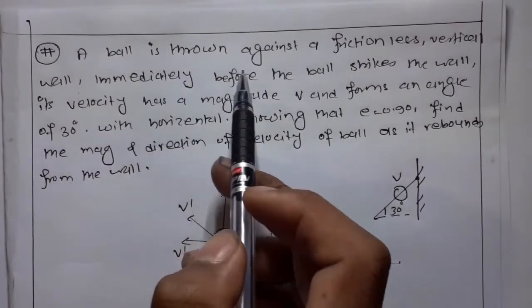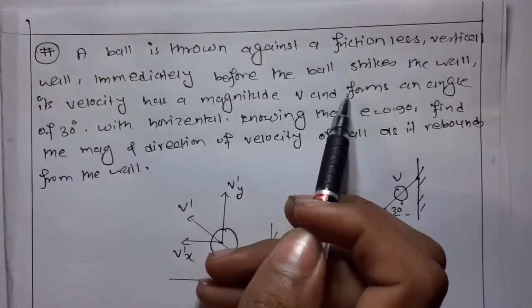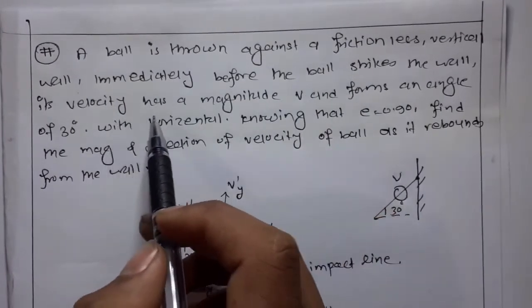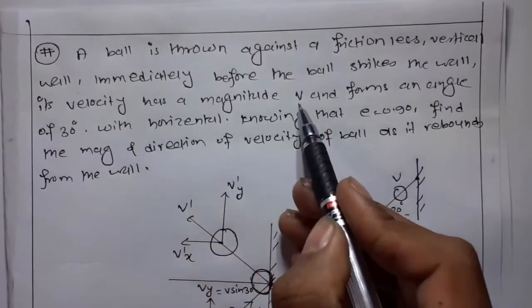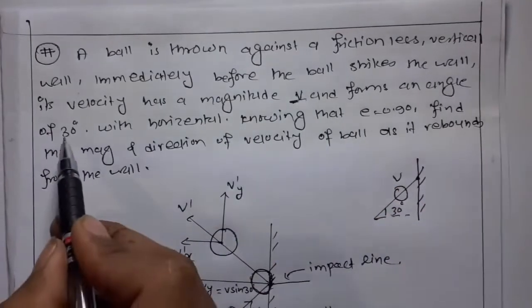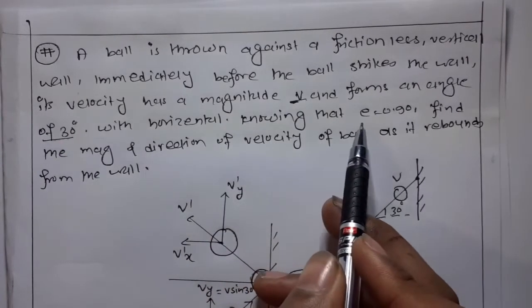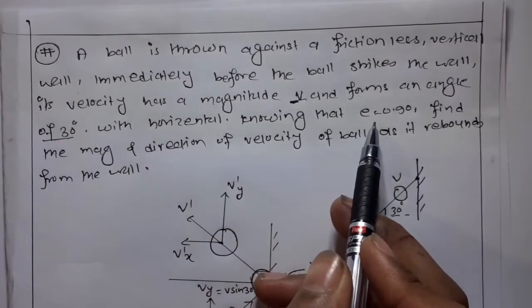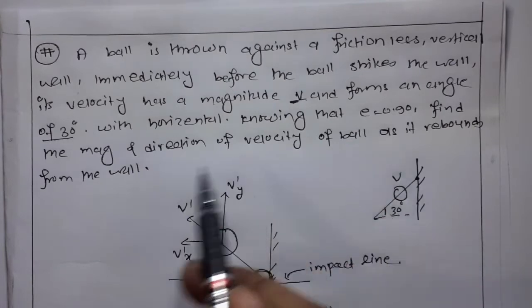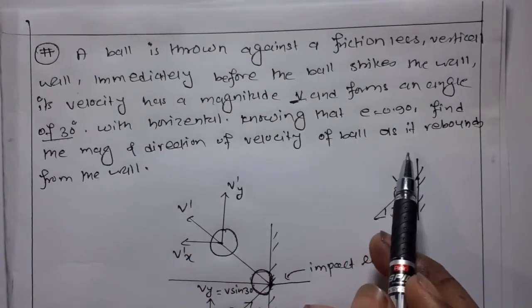A ball is thrown against a frictionless vertical wall. Immediately before the ball strikes the wall, its velocity has a magnitude v and forms an angle of 30 degrees with the horizontal. Knowing that the coefficient of restitution e is 0.9, find the magnitude and direction of velocity of the ball as it rebounds from the wall.